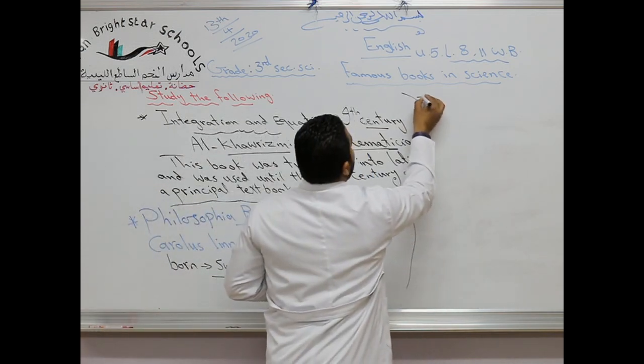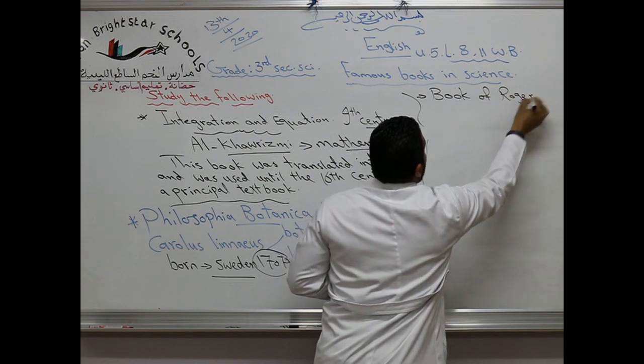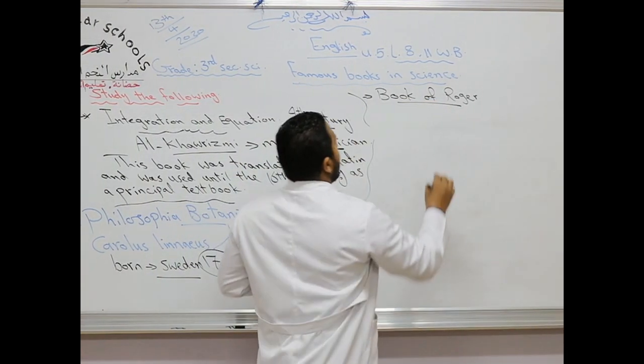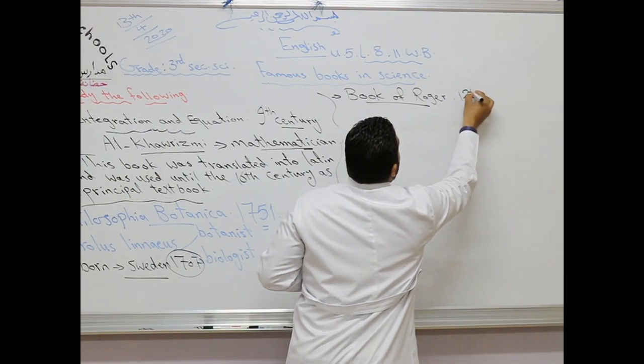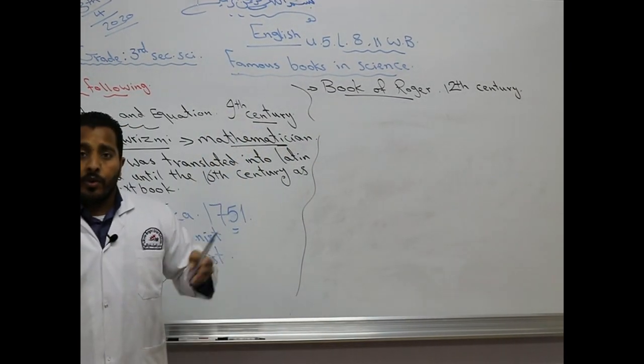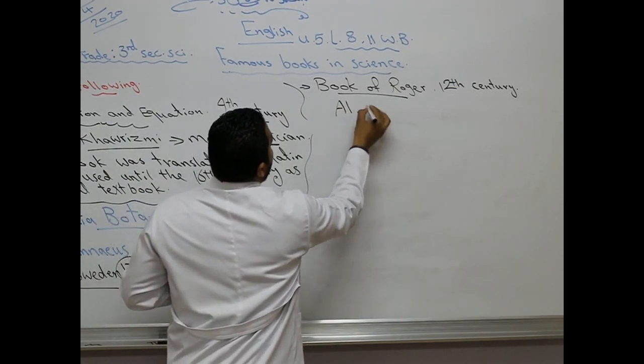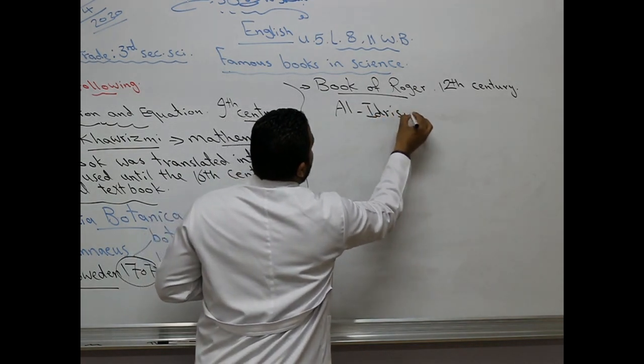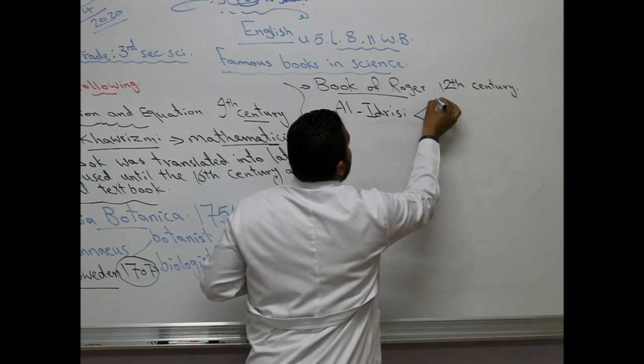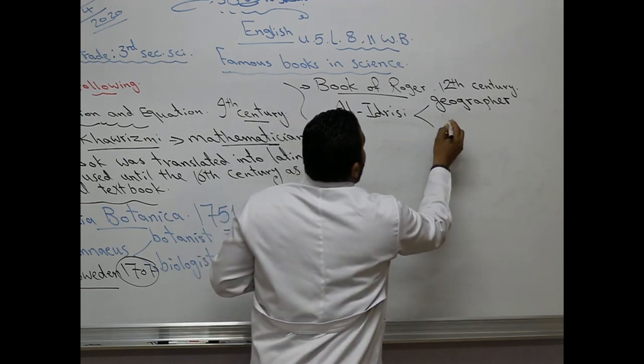The third one is Book of Roger, or in Arabic, Al-Kitab al-Rogari. Written in the 12th century by the Arab geographer and cartographer, Al-Idrisi.